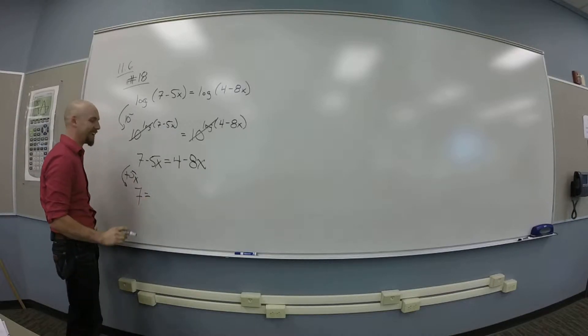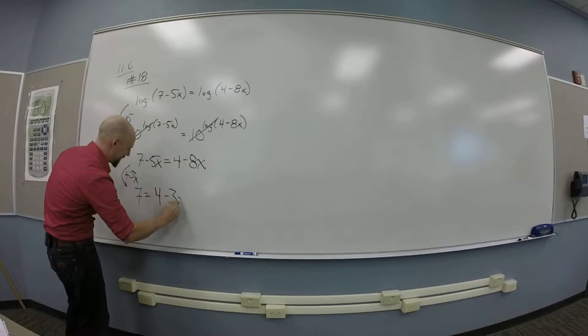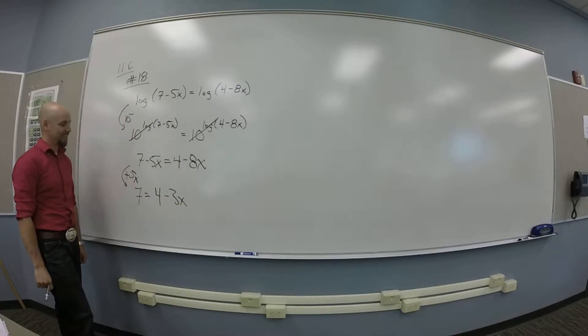So I get 7 on the left and on the right I get 4 minus 3x. And then what?